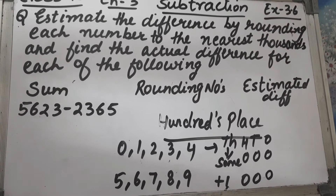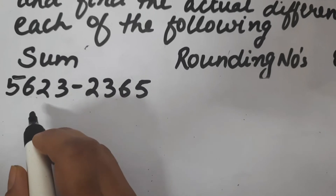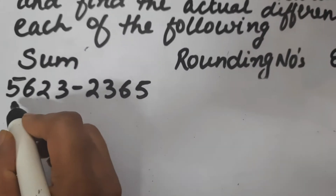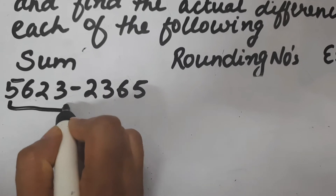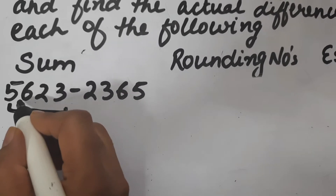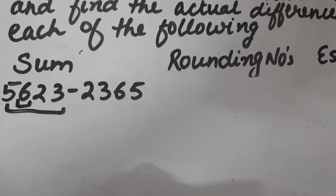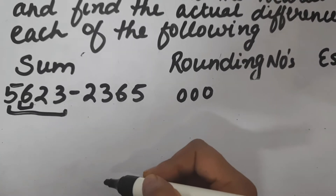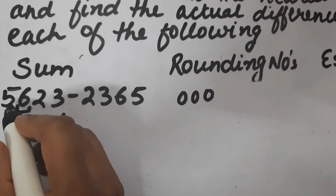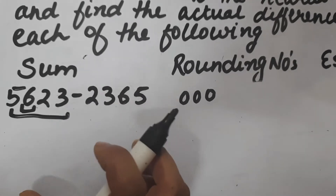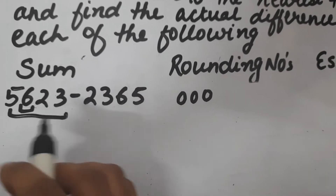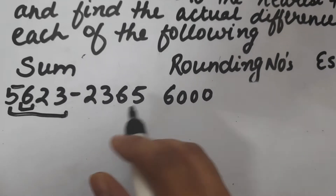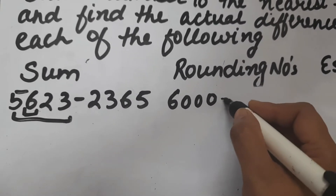So let's start the sum. The question is 5,623 minus 2,365. First of all we will round off this number to the nearest thousand. Here the hundreds place is 6, so your ones, tens, and hundreds place will become zero and the thousands place will be increased by 1. Here it is 5, so it will become 6,000.